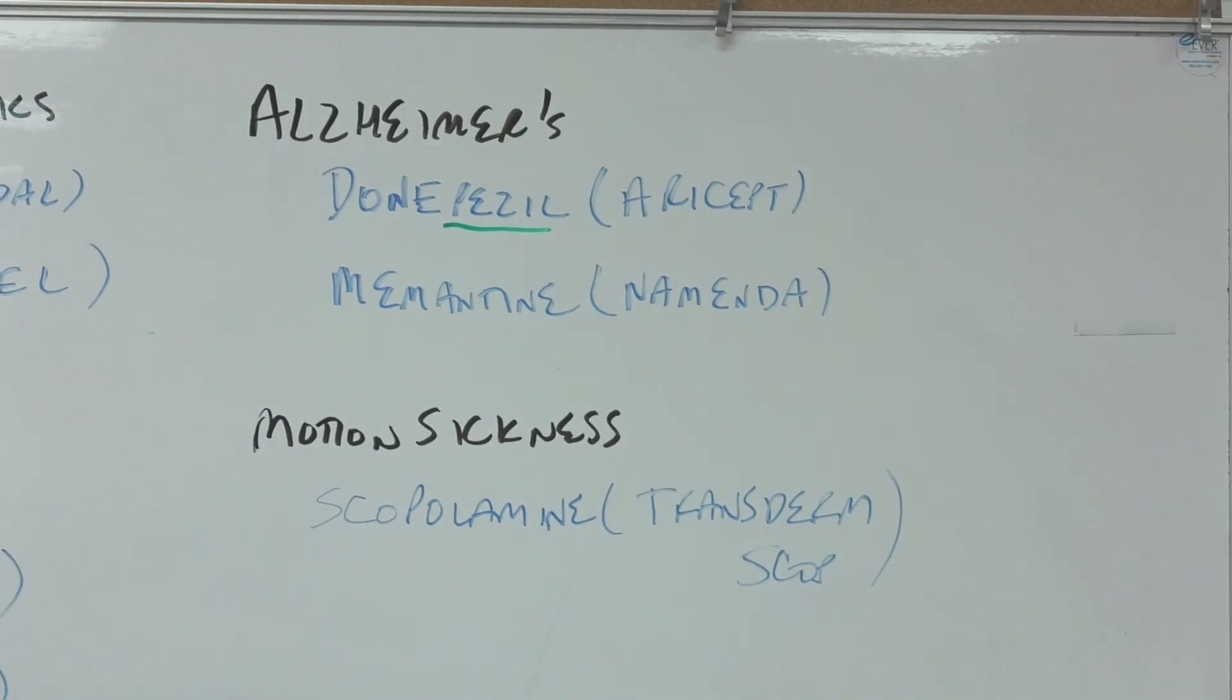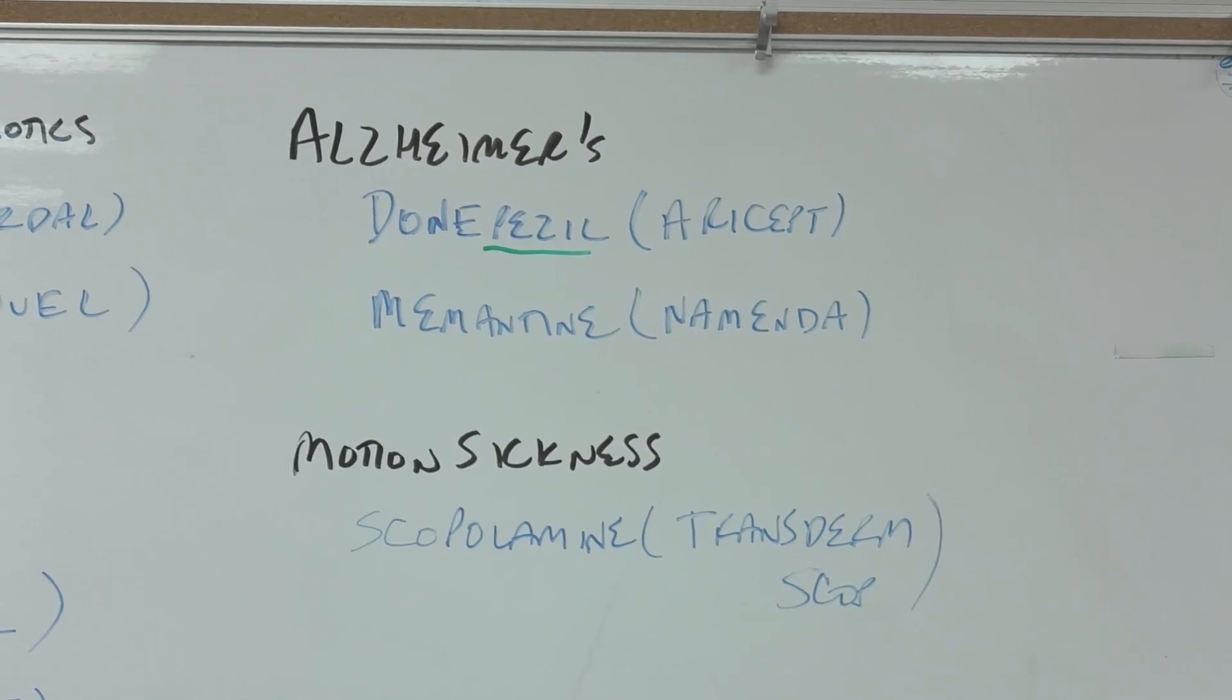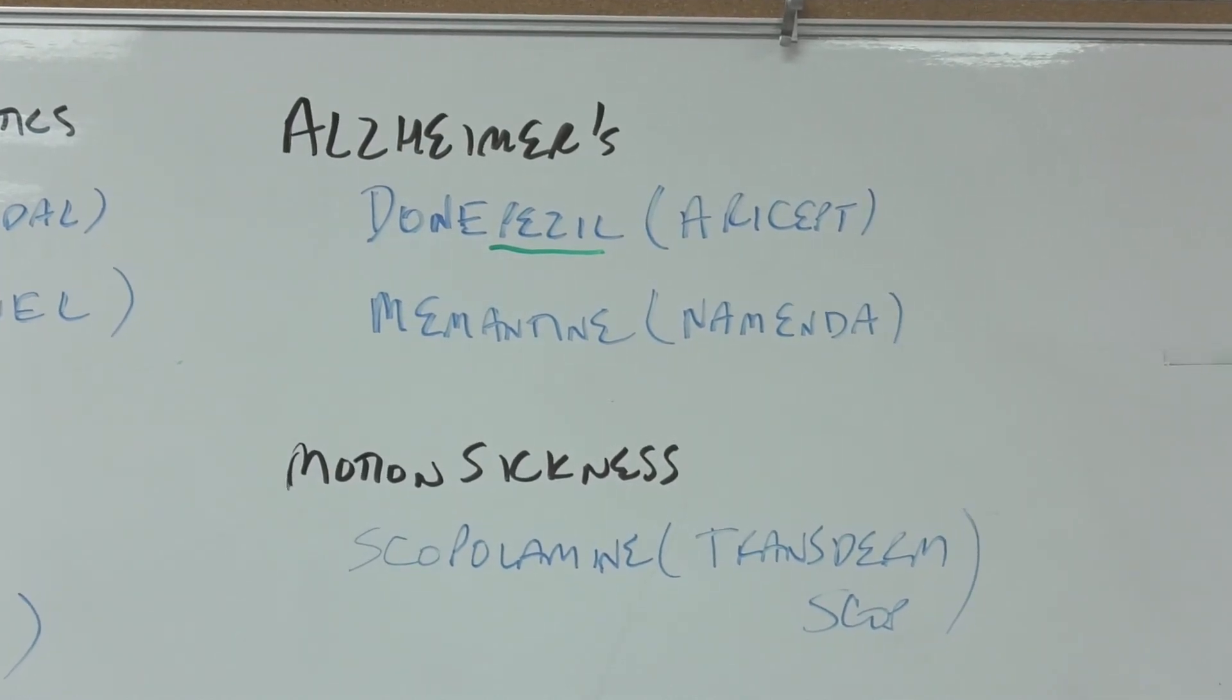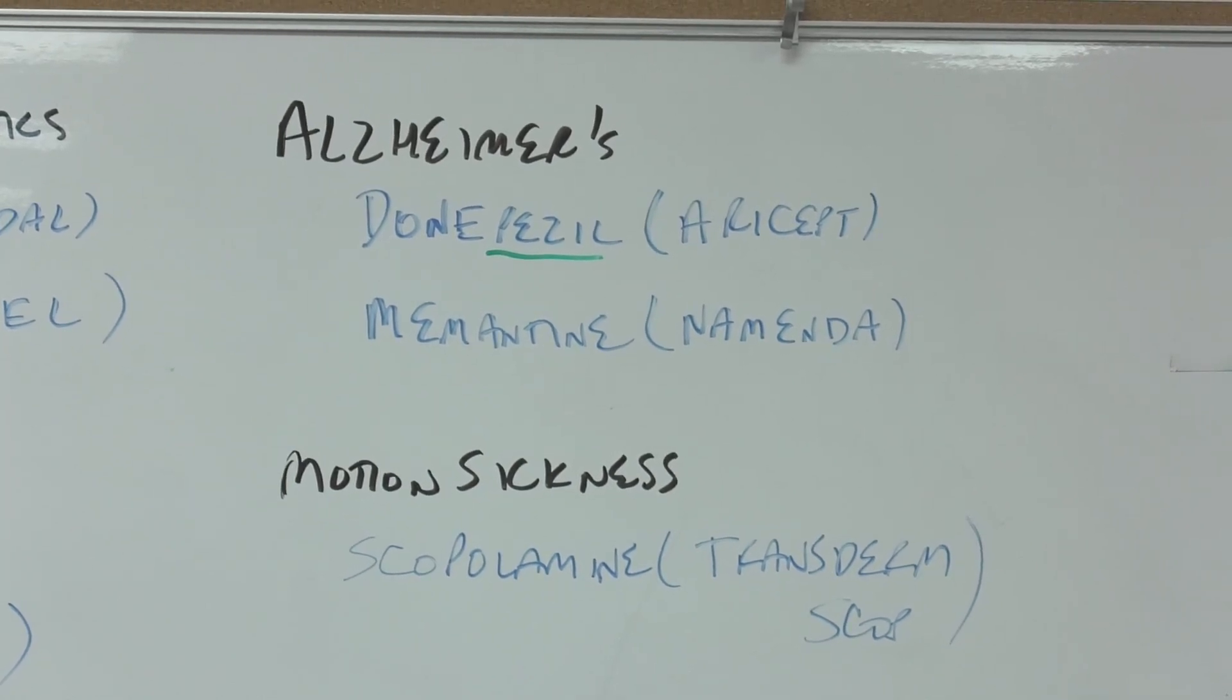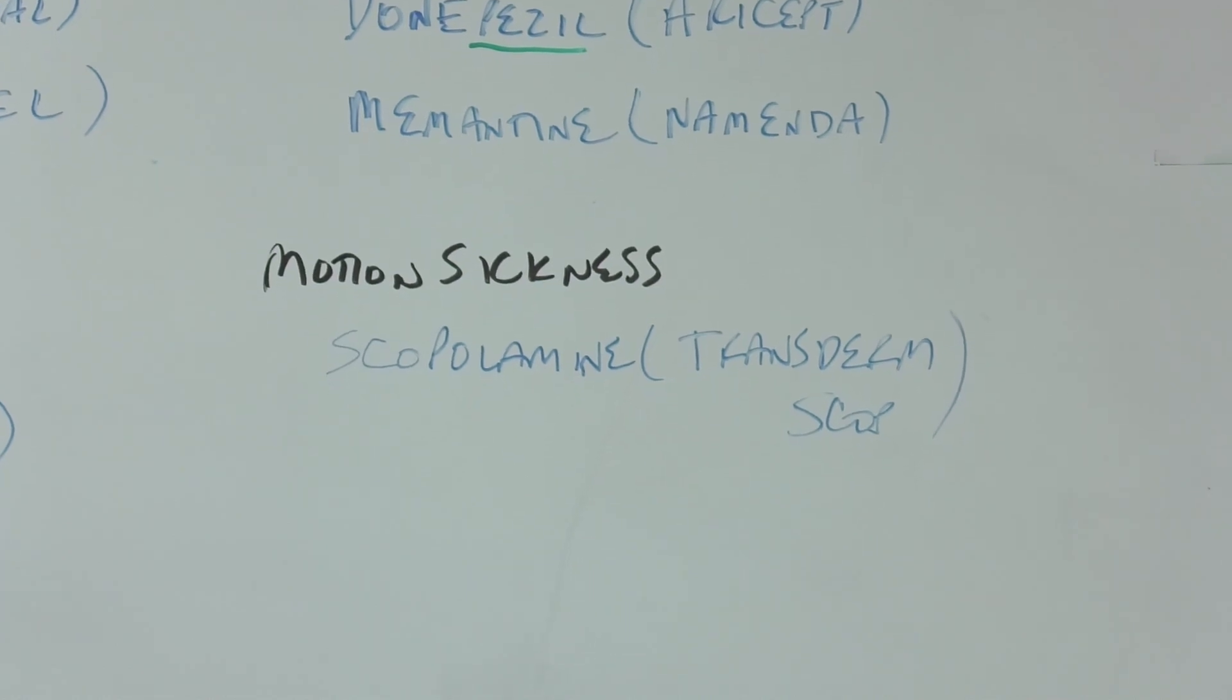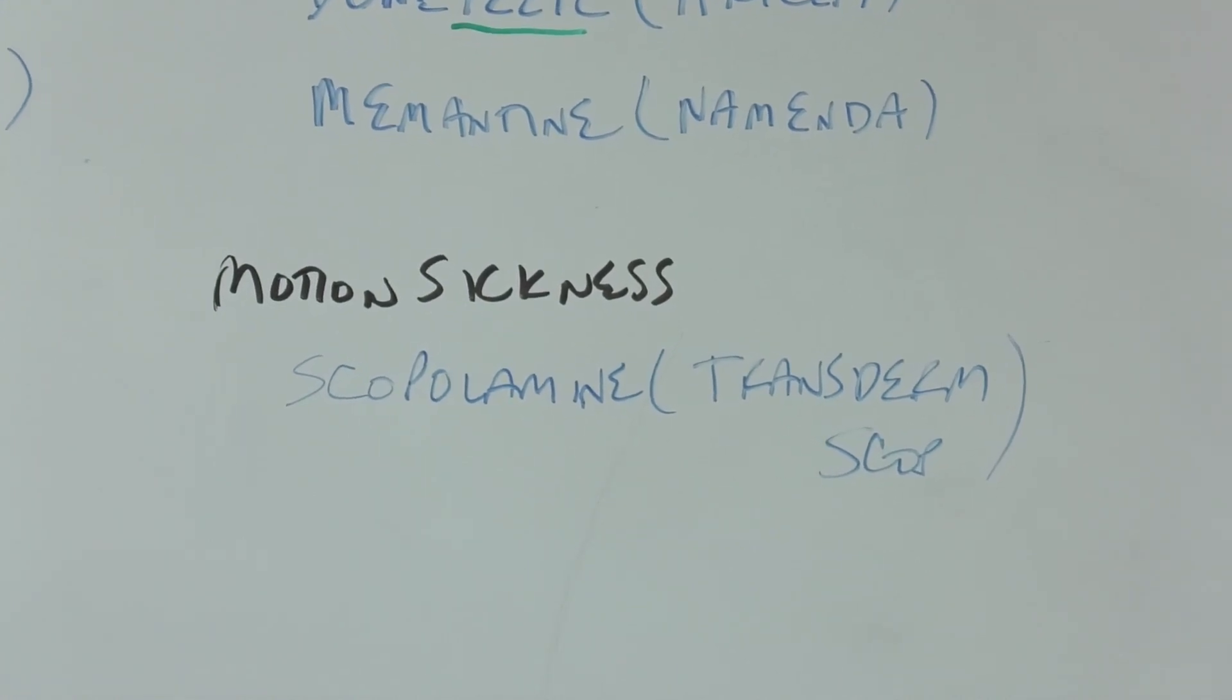Alzheimer's: donepezil. The way I remembered it was my memory is done, I can't remember zilch, or you can think of perception and Aricept - maybe you lose some degree of perception. Memantine - the mem from memory tends to ring a bell, but then Namenda has the NMDA, and that's what kind of receptor it affects. The last medication is motion sickness: scopolamine is Transderm Scop. Trans derm means across skin, Scop taking the first four letters of scopolamine. This is usually used for cruise ships - a person puts on a patch and they don't have to keep taking Dramamine. That's neuro in a nutshell.